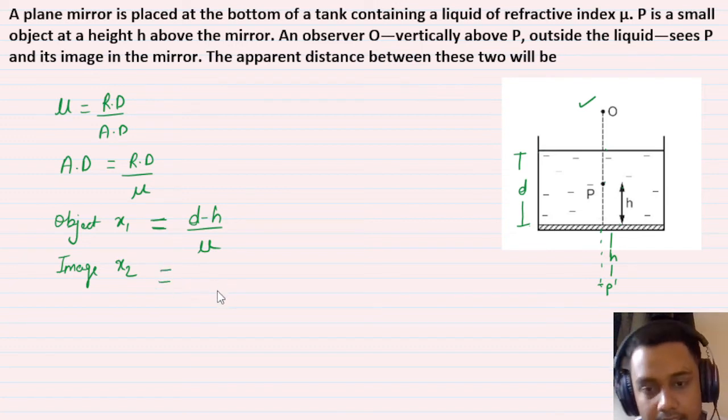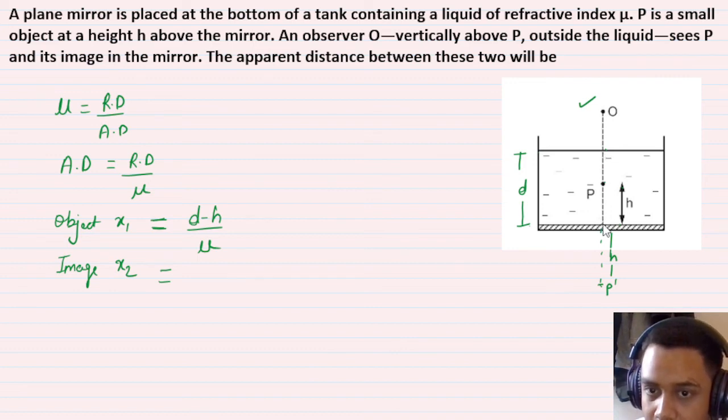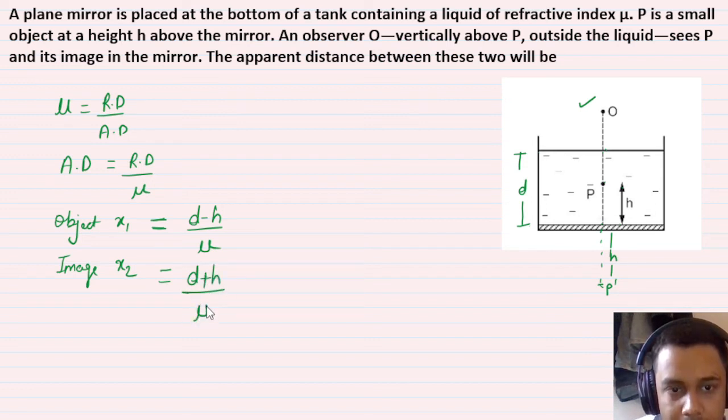Now let's find x2 for the image. The apparent depth is real depth upon μ. The real depth for the image is D plus H. So x2 = (D+H)/μ.